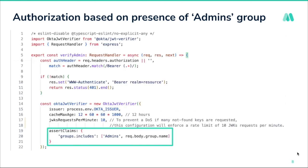Here is an example — a Node.js middleware that validates if the claims include a groups field and if it includes the admins group. This is how authentication and authorization was set up for internal applications, and the setup served its purpose well.